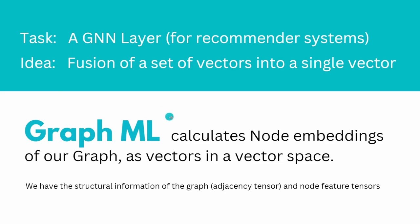Graph machine learning calculates node embeddings. Full stop. Node embeddings for all of our nodes in our graph. And those node embeddings are vectors as you know them in a vector space. And a GNN layer, this is the simplest object in a graph machine learning task is a layer, for example for a recommender system, has a simple task.